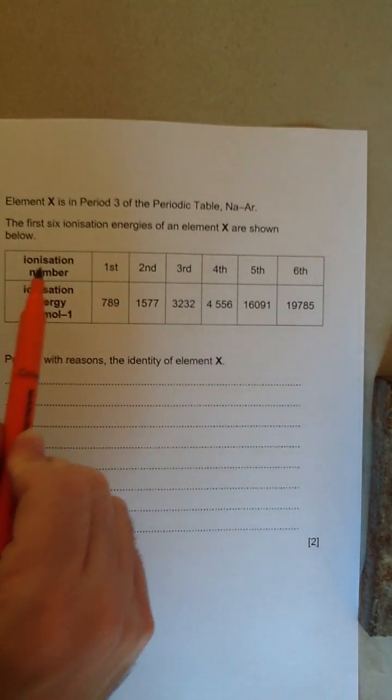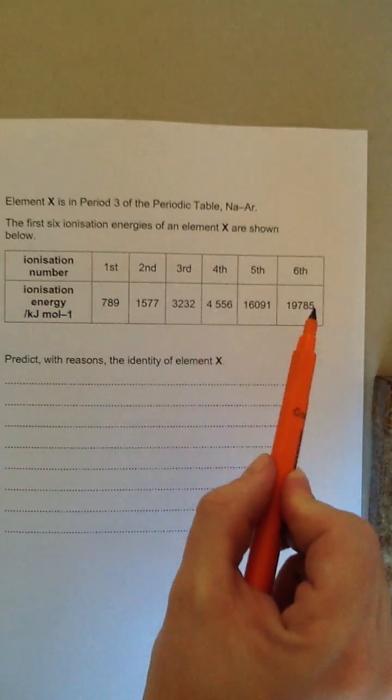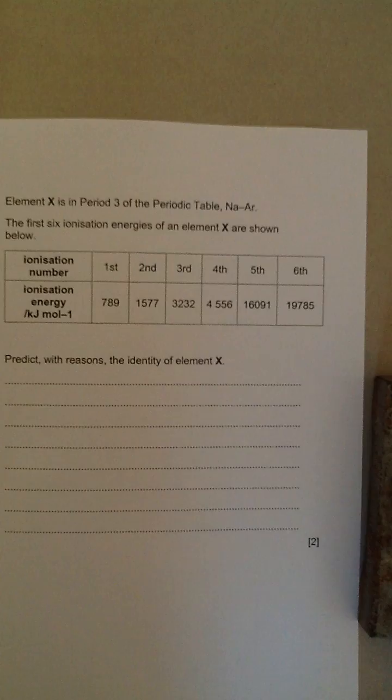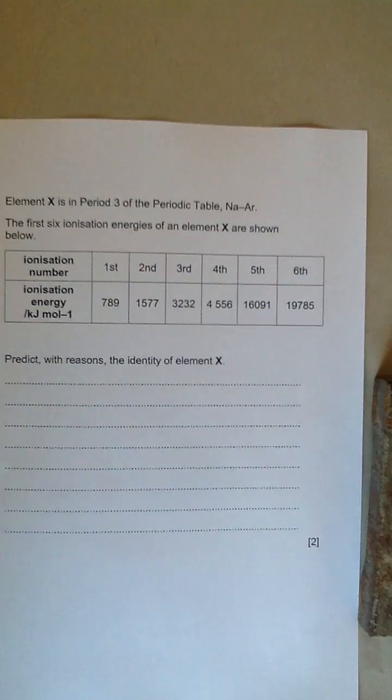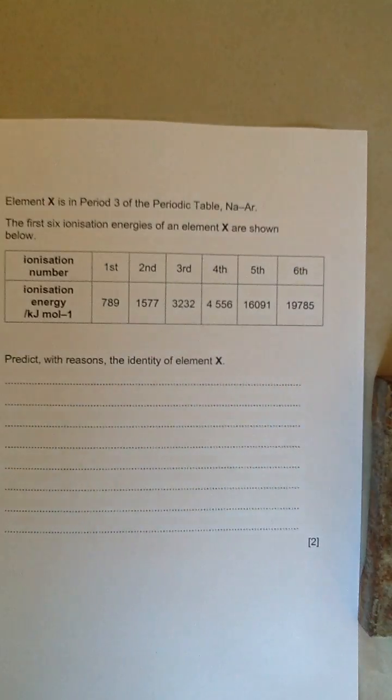It gives you the ionization energies going across the top - the numbers and the ionization energies on the bottom. The task is to predict, with reasons, the identity of element X. The secret to this question is to look at the ionization energies and find a really big jump in the differences of the ionization energies.